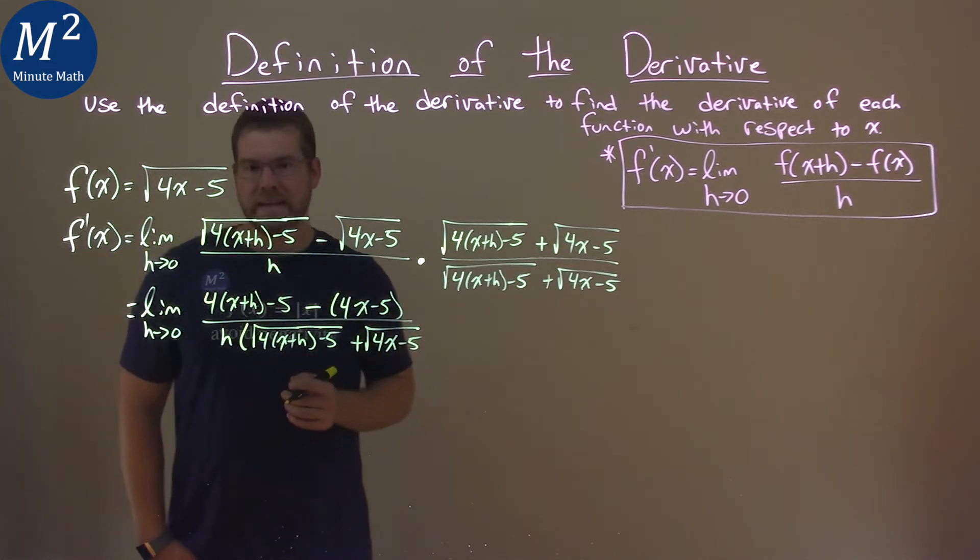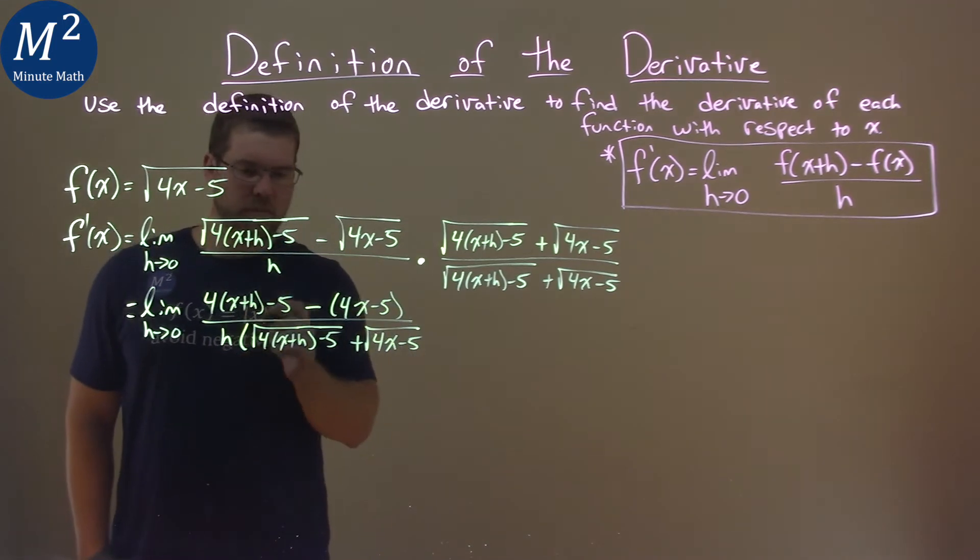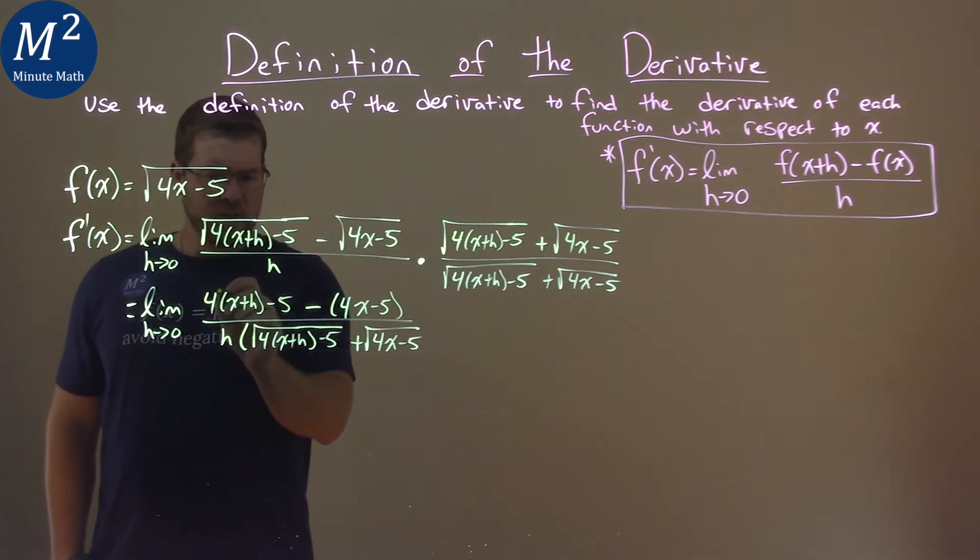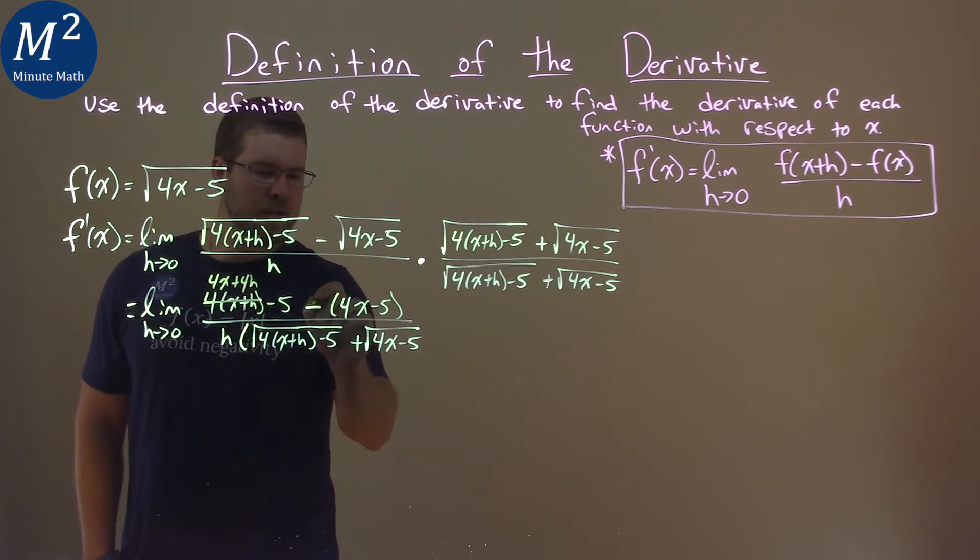Alright, from here, now here's the kind of tricky part. I'll kind of do some work here, because I don't feel like rewriting it. Distribute the 4 to the x and the h, so we have 4x plus 4h right here. Okay, keep that in mind.